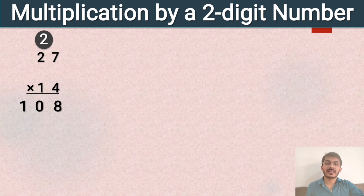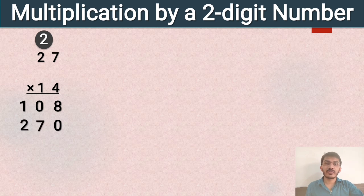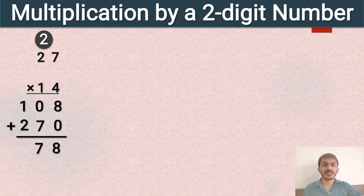Now we multiply 27 by 1. 1 is at the tens place, and there is one zero in 10, so first we write 0 at the ones place. 1 sevens are 7, and 1 twos are 2. Now we add both numbers: 108 plus 270. 8 plus 0 is 8, 0 plus 7 is 7, and 1 plus 2 is 3. So 27 multiplied by 14 equals 378.